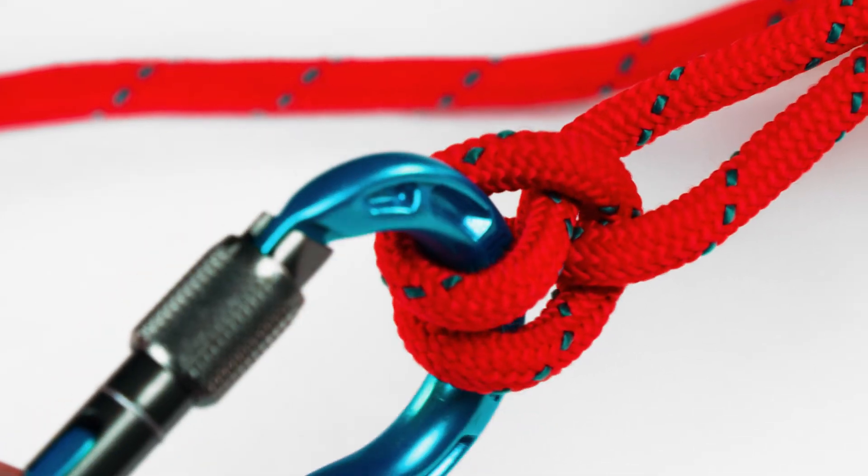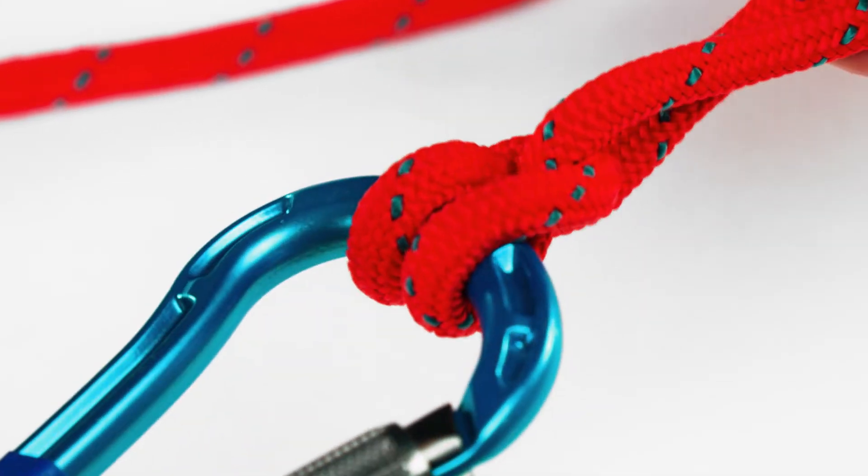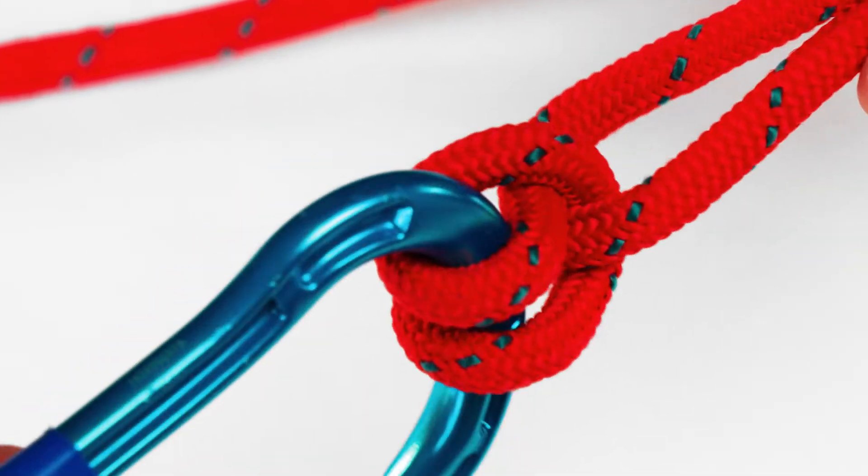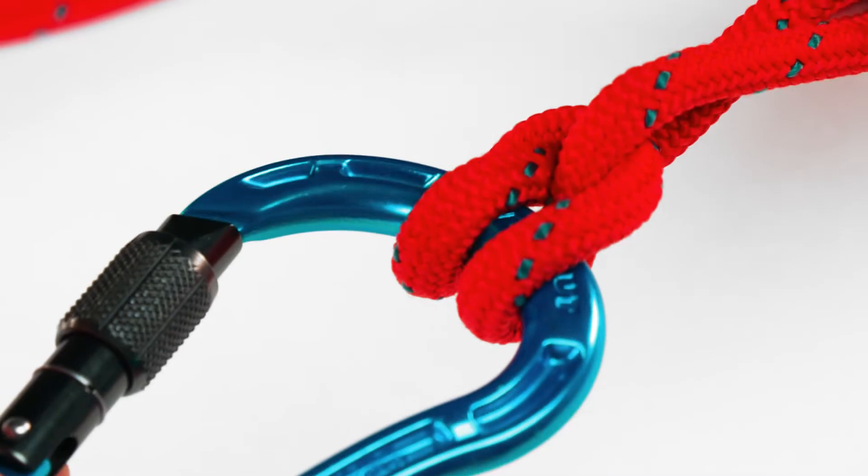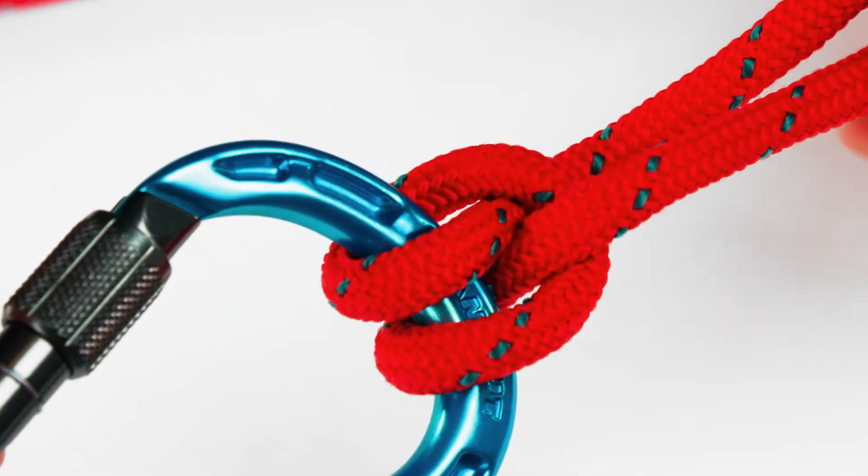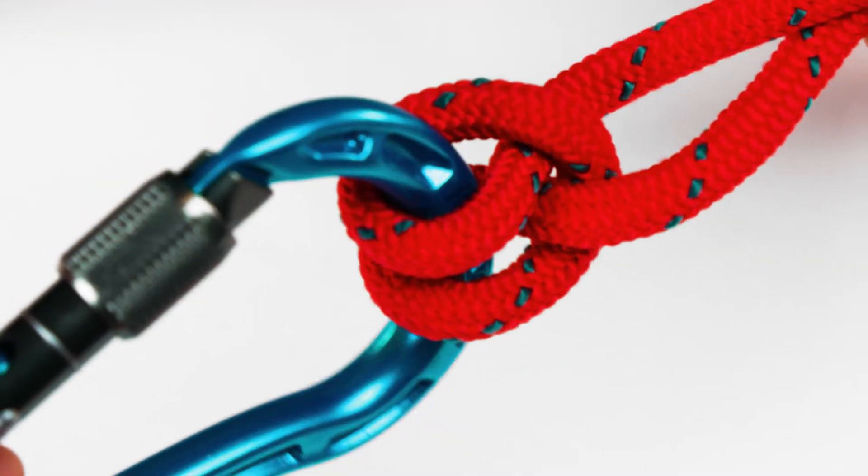This can be used to secure the middle of a rope around objects such as carabiners or fire hoses. As they are prone to slippage, they should not be used on the end of a rope.